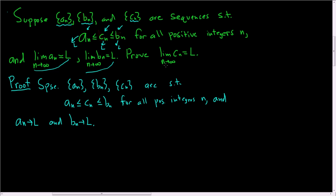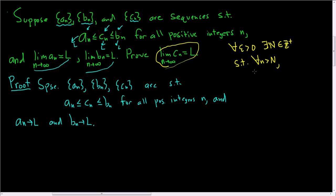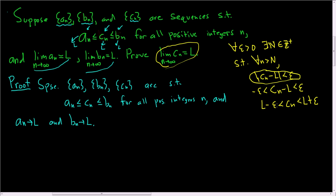Now we just have to figure out how to prove this. Using the definition, we're trying to show that for all epsilon greater than zero, there exists a positive integer capital N, such that for all little n greater than capital N, the distance between c_n and l is smaller than epsilon. That means c_n − l is smaller than epsilon and greater than negative epsilon — it's trapped between negative epsilon and epsilon. We can add l to all three sides, and we get this inequality. So this is equivalent to this, and if we can come up with this in the proof, we're basically done.